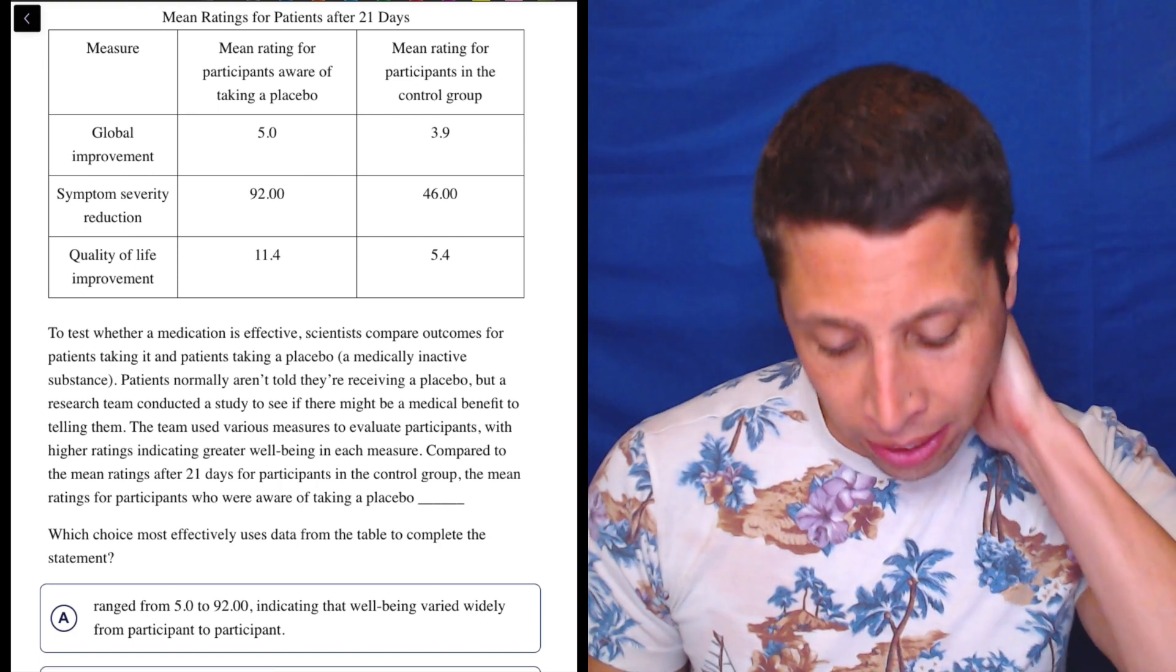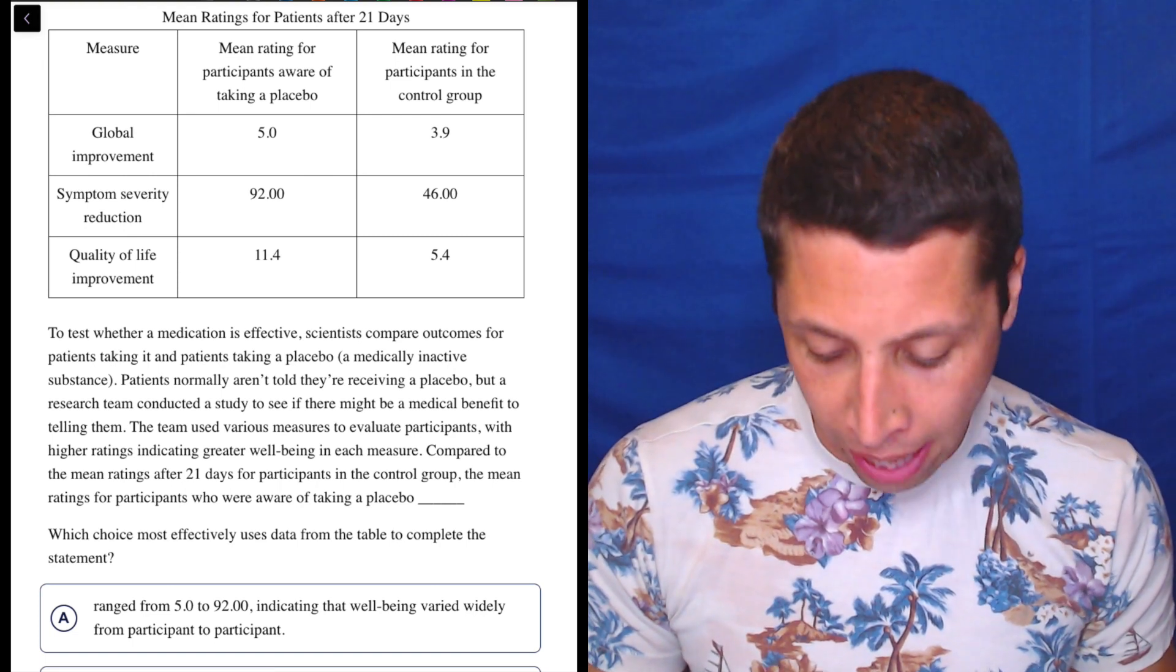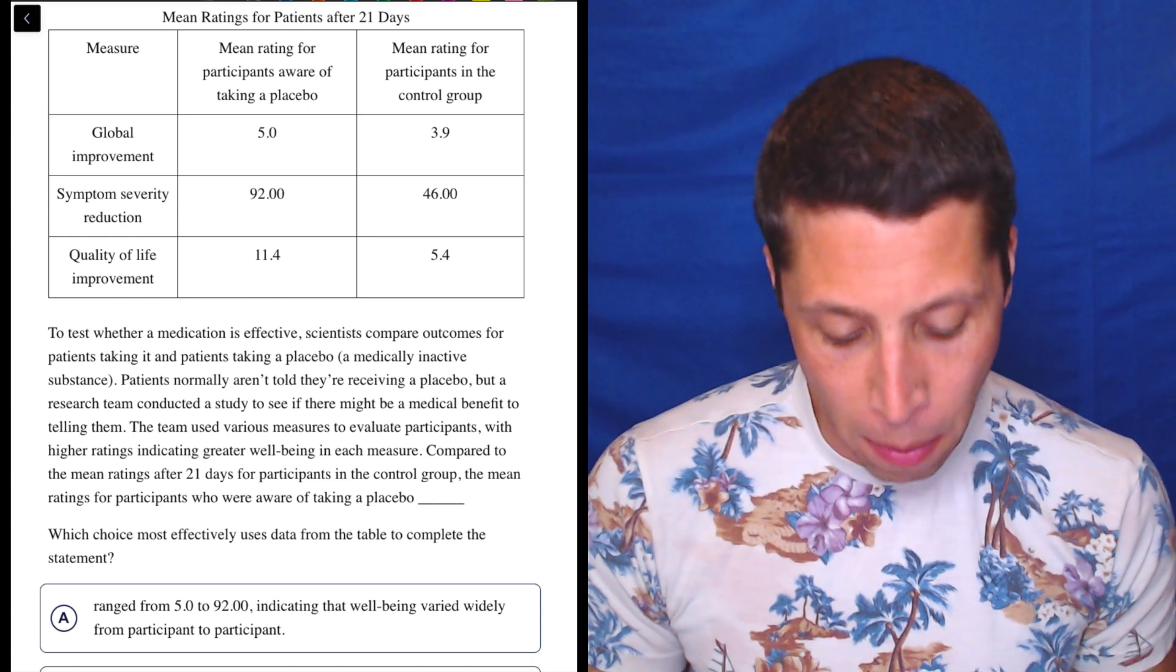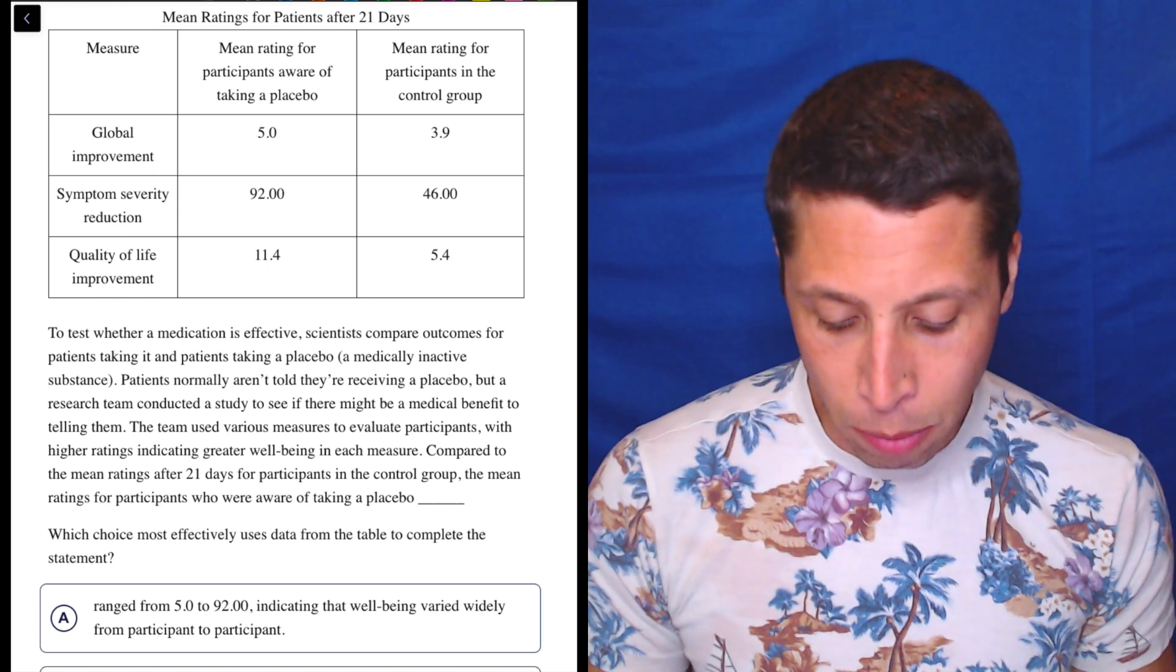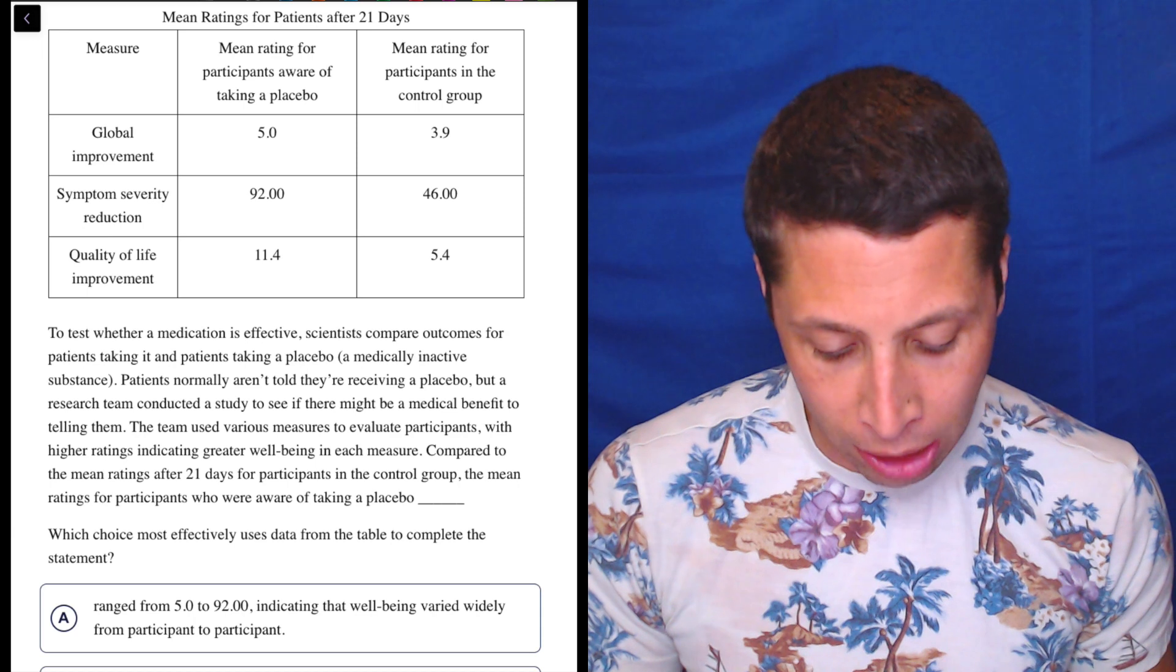To test whether medication is effective, scientists compare outcomes for patients taking it and patients taking a placebo, a medically inactive substance. Patients normally aren't told they're receiving a placebo, but a research team conducted a study to see if there might be a medical benefit to telling them. The team used various measures to evaluate participants with higher ratings indicating greater wellbeing in each measure.